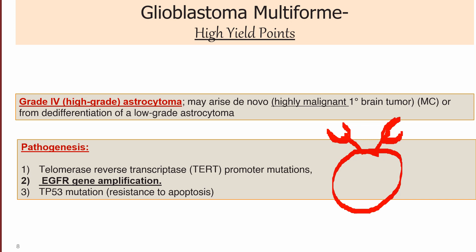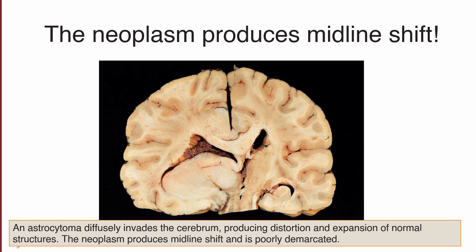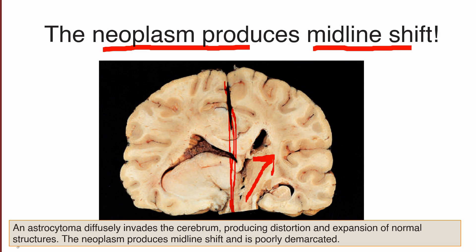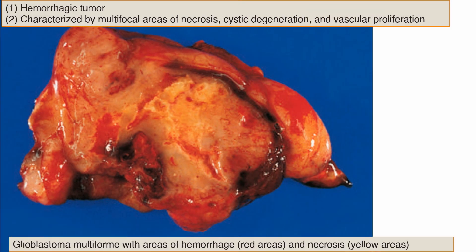Glioblastoma can produce a midline shift — structures shift away from the midline, causing distortion and expansion of normal structures. These tumors generally arise in the cerebrum, causing adjacent structures to shift away from the midline. Regarding gross appearance, there are sites of hemorrhage and necrosis. Hemorrhage and necrosis within the frontal or parietal lobe grossly suggest glioblastoma multiforme.